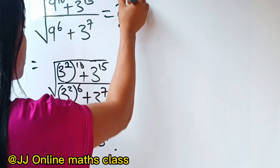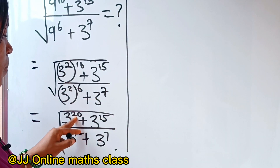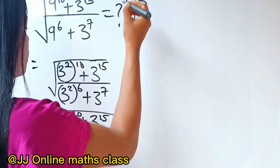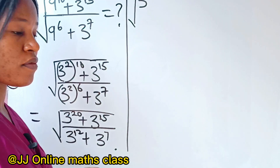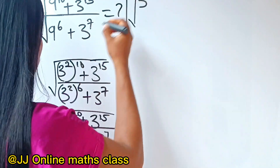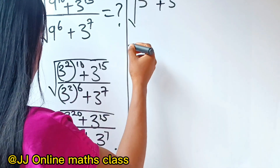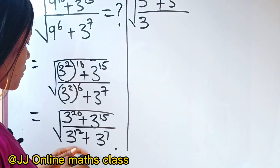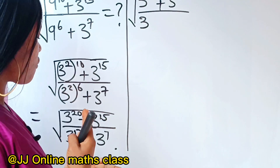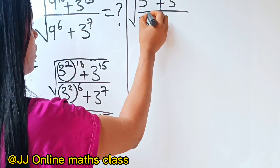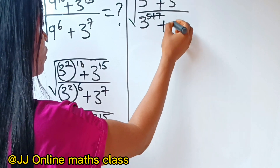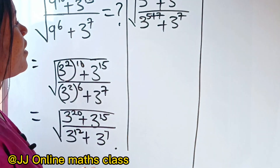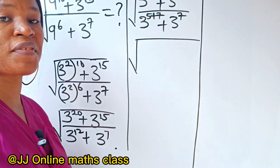Let's proceed. We can still split this — we can write 3 to the power of 15 plus 5, right, plus 3 to the power of 15. Divided by 3 to the power of 12, which can be written as 5 plus 7, so let's write it like that: 5 plus 7, plus 3 to the power of 7.